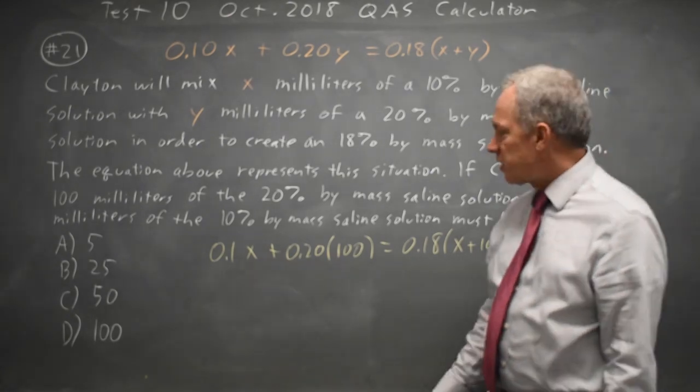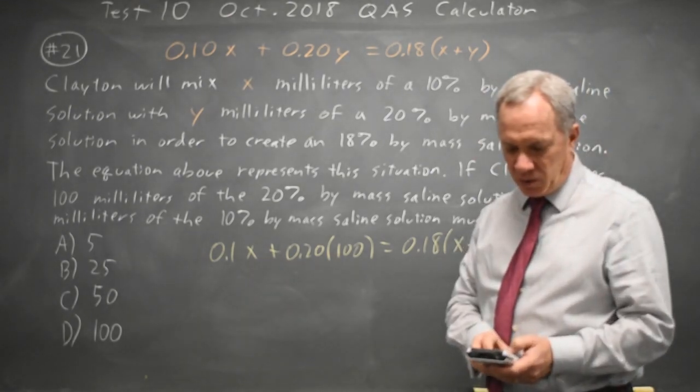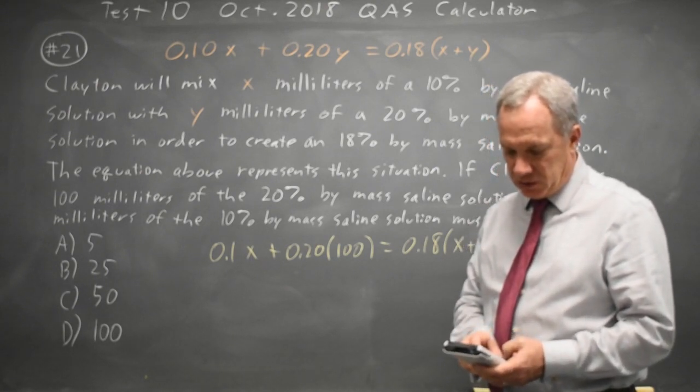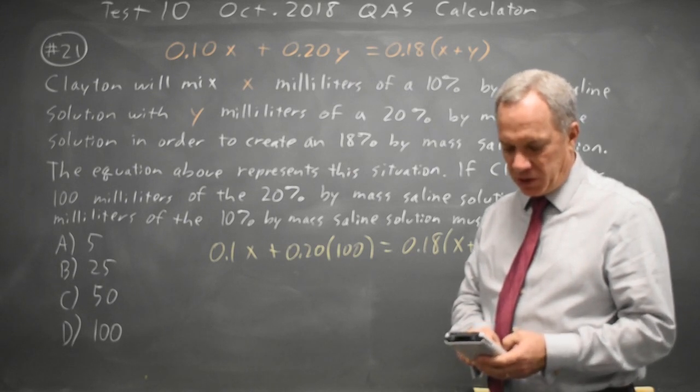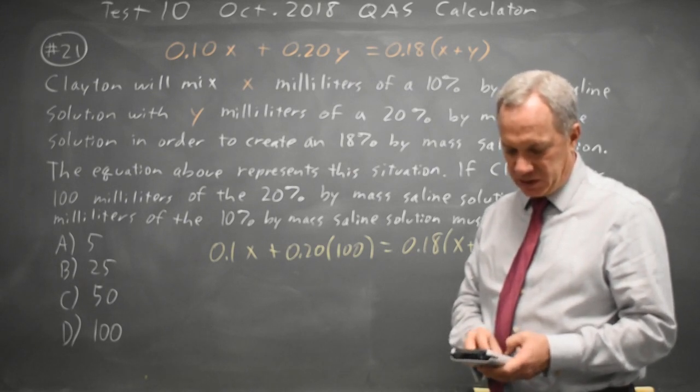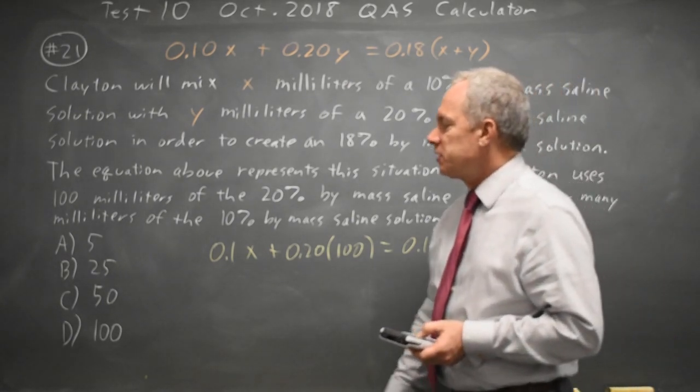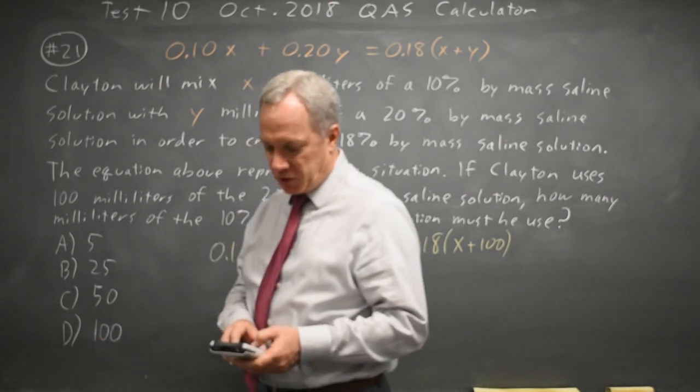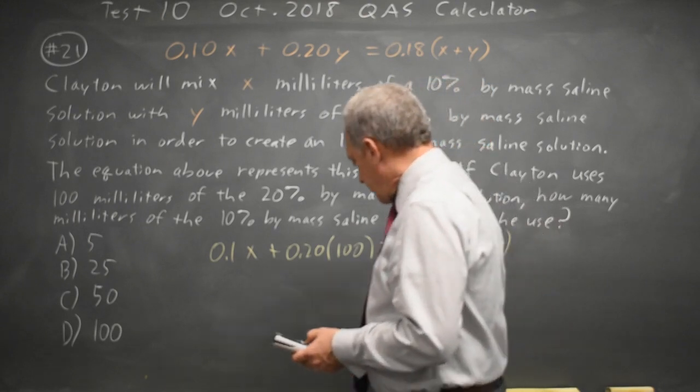...put the left side into y1: .1x + .2(100) and the right side into y2: .18(x + 100), graph it in a window where your x window includes the maximum solution here 100, and I'm going to take a y max of 40. The graph looks like this and the x coordinate at the point of intersection will be my solution.